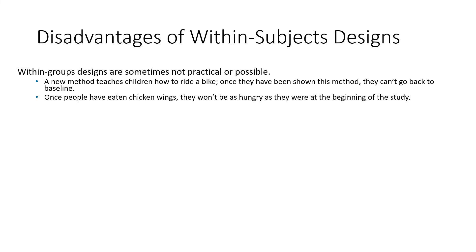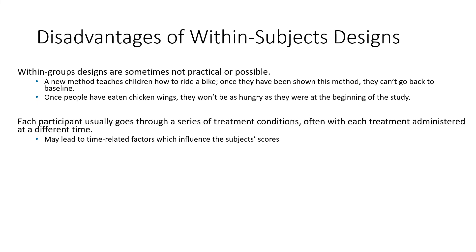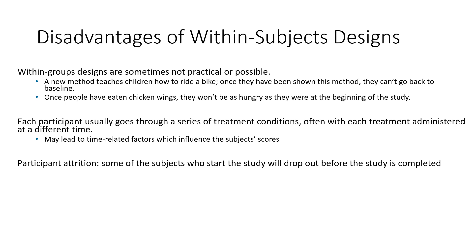Similarly, if you're studying how much food people eat with different options, you can't put chicken wings in front of them until they're full and then 15 minutes later present a different food — of course they won't eat as much because they're already full. If you do this a day apart and they come in at the same hunger level each time, then you can do it. But each participant usually goes through the series of treatment conditions at different times, which can introduce time-related factors. Also, attrition can occur — some subjects will start the study but drop out before it's completed. If you're giving drug A one week and drug B the next, some participants won't come back for drug B.